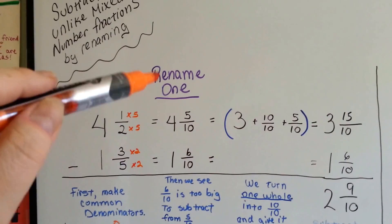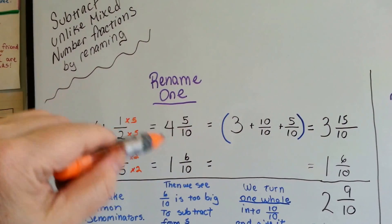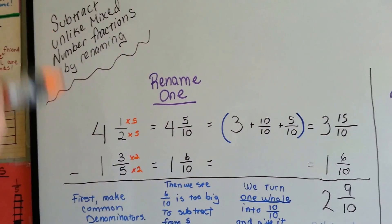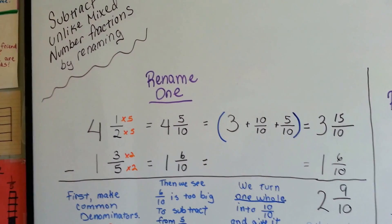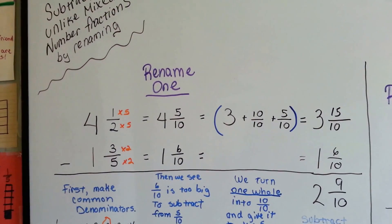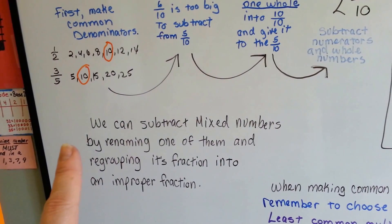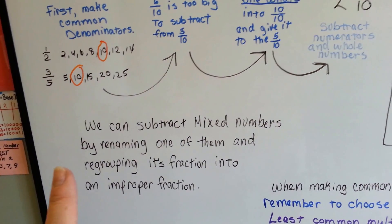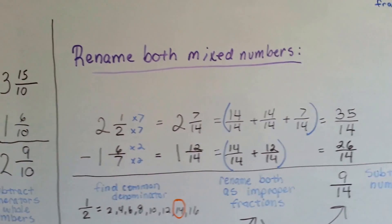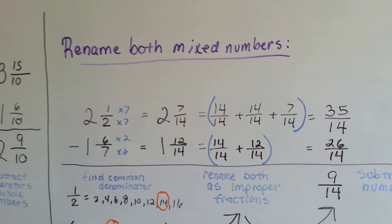So, sometimes we have to rename one of the mixed numbers when we're subtracting unlike mixed fractions. Now, sometimes we do both. We can subtract the mixed numbers by renaming one of them and regrouping its fraction into an improper fraction, but sometimes we need to rename both and it will make it easier on us.